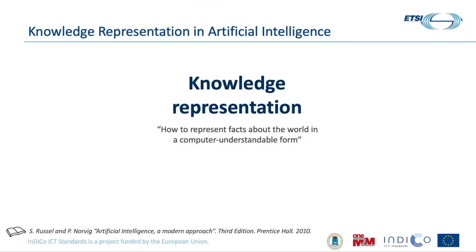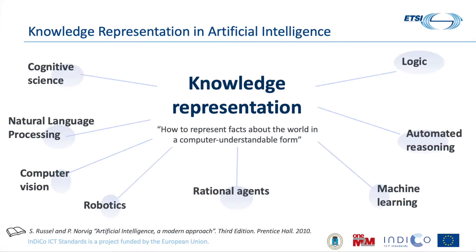To do so, we have to start talking about the branch of artificial intelligence that is knowledge representation. Knowledge representation deals with how to represent facts about the world in a way that computers can understand. This branch of artificial intelligence has a tight relationship with all the branches in a lower or greater extent.